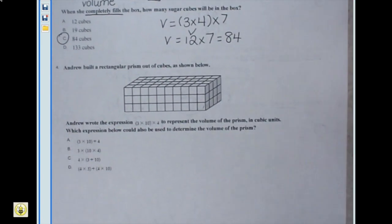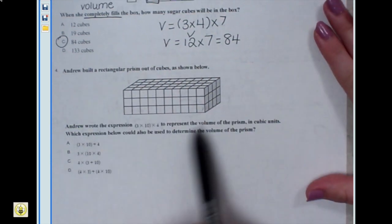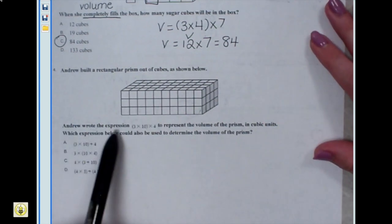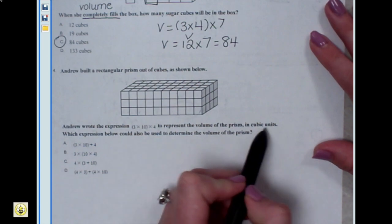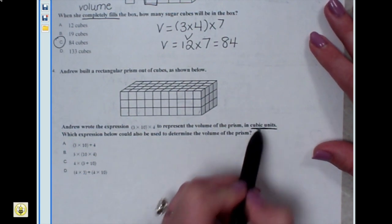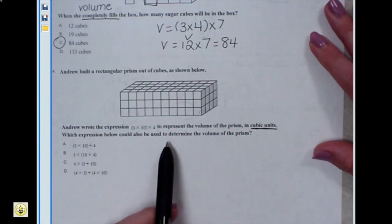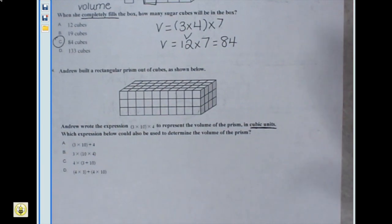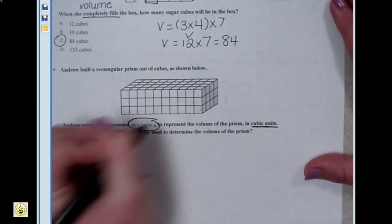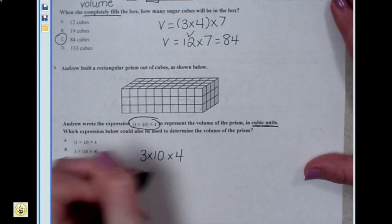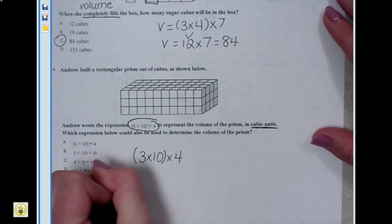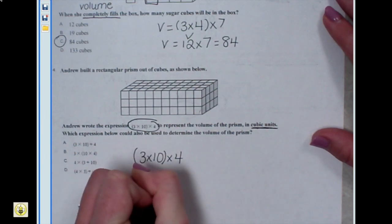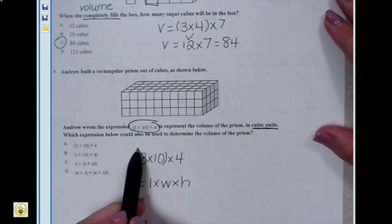Let's look at the last one. It says Andrew built a rectangular prism out of cubes. Andrew wrote the expression three times ten times four — with parentheses around three times ten — to represent the volume in cubic units. Remember, we measure volume in cubic units because there are three dimensions. The question asks which expression below could also be used to determine the volume. This expression looks like my volume formula: length times width times height, where he's going to multiply three times ten first.